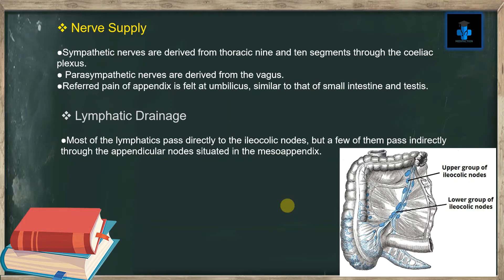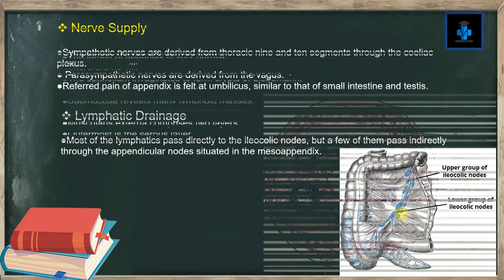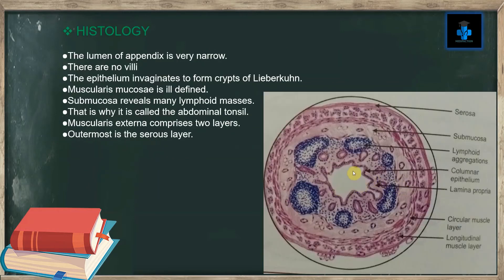Lymphatic drainage: most of the lymphatics pass directly to the ileocolic nodes, but a few pass indirectly through the appendicular nodes situated in the mesoappendix. Histology: the lumen of the appendix is very narrow and there are no villi. The epithelium invaginates to form crypts of Lieberkühn. The muscularis mucosa is ill-defined. The submucosa reveals many lymphoid masses — that is why it is called the abdominal tonsil. The muscularis externa comprises two layers; the outermost is the serous layer.